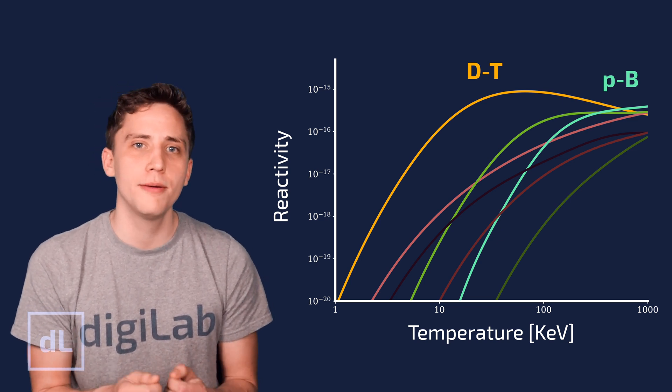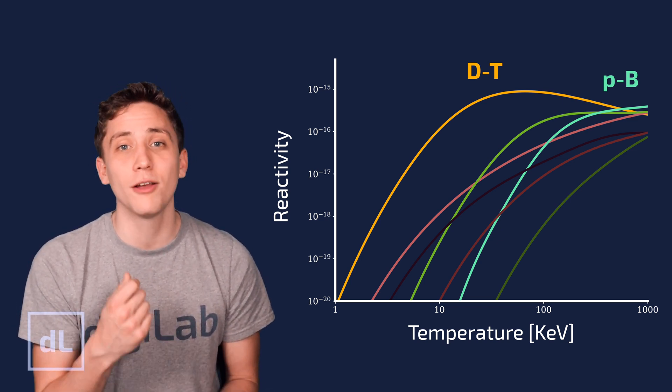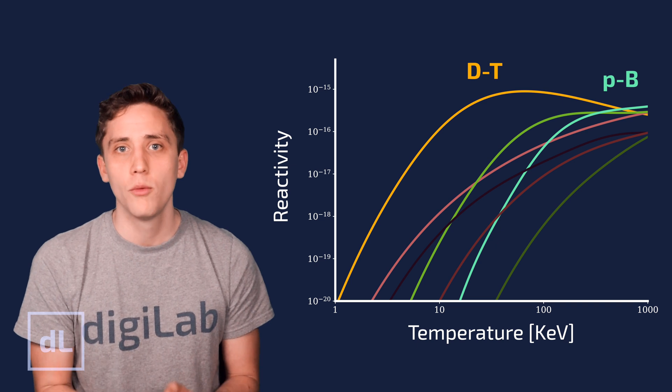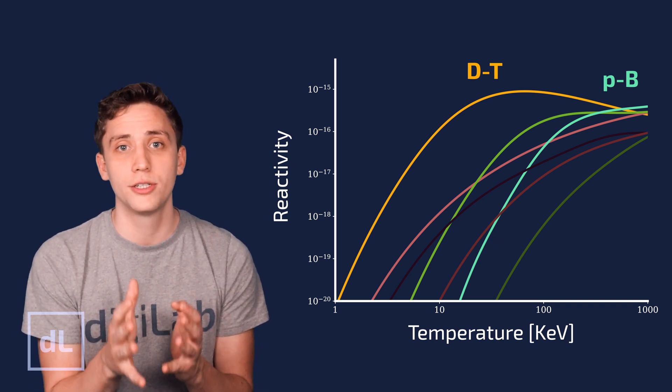First of all, deuterium-tritium fusion reactions produce a great deal of high energy neutrons, which can cause radiation damage to surrounding material.